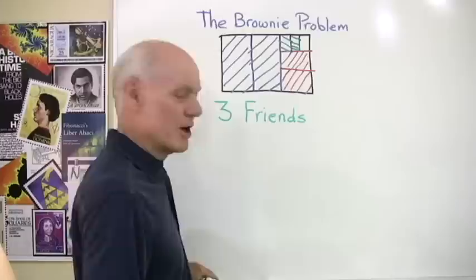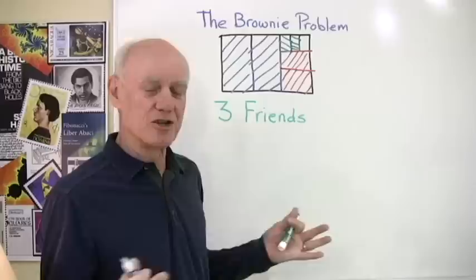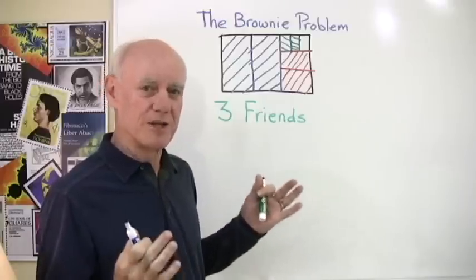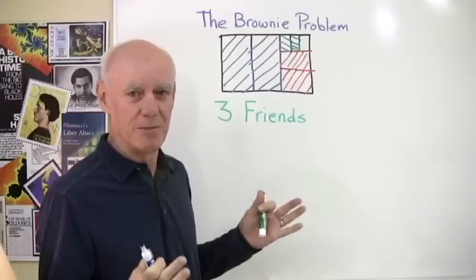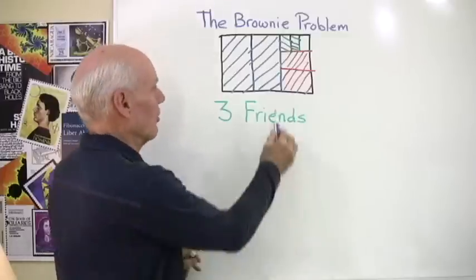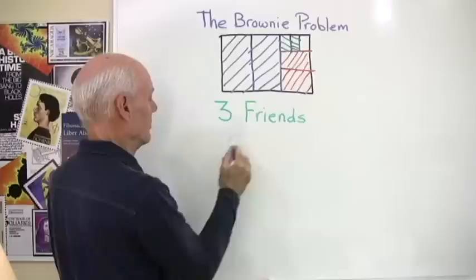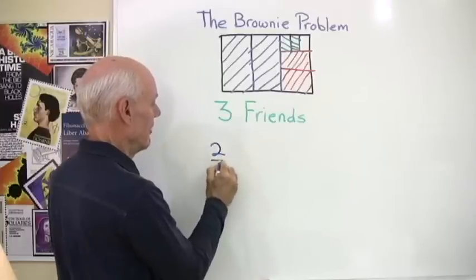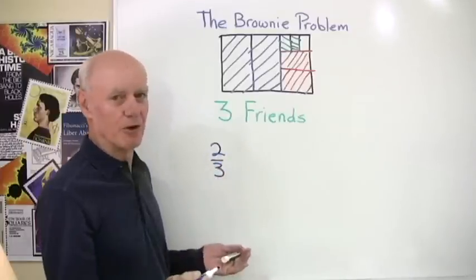So then the question is this: Can you write an expression or an equation that describes how much of the brownies have been eaten by those two people? We look at the blue part right here and we see that, well, they started off by eating two-thirds of the whole pan of brownies.